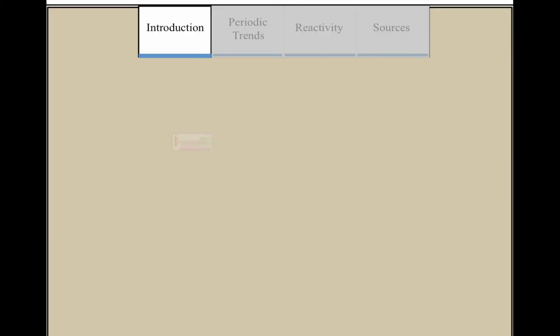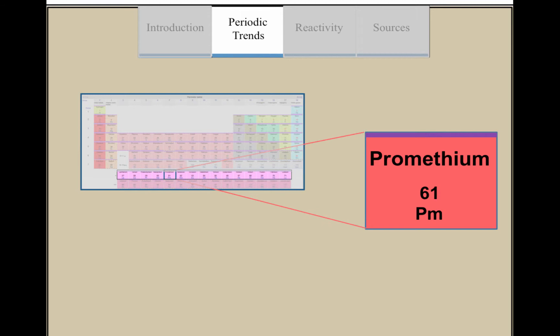Prometheum is a part of the lanthanide group. Because it doesn't follow regular periodic trends, it doesn't have an electronegativity nor electron affinity value.